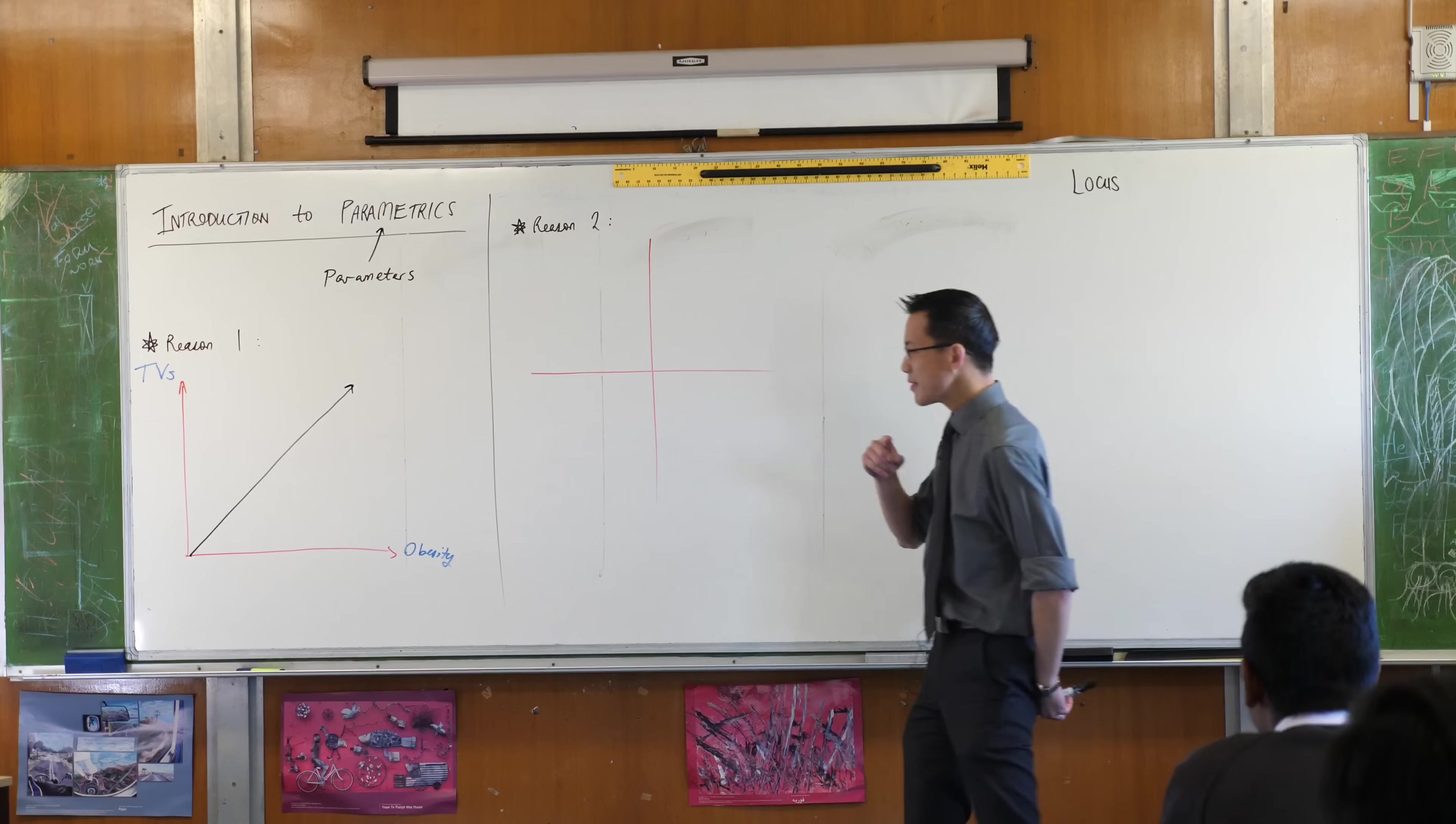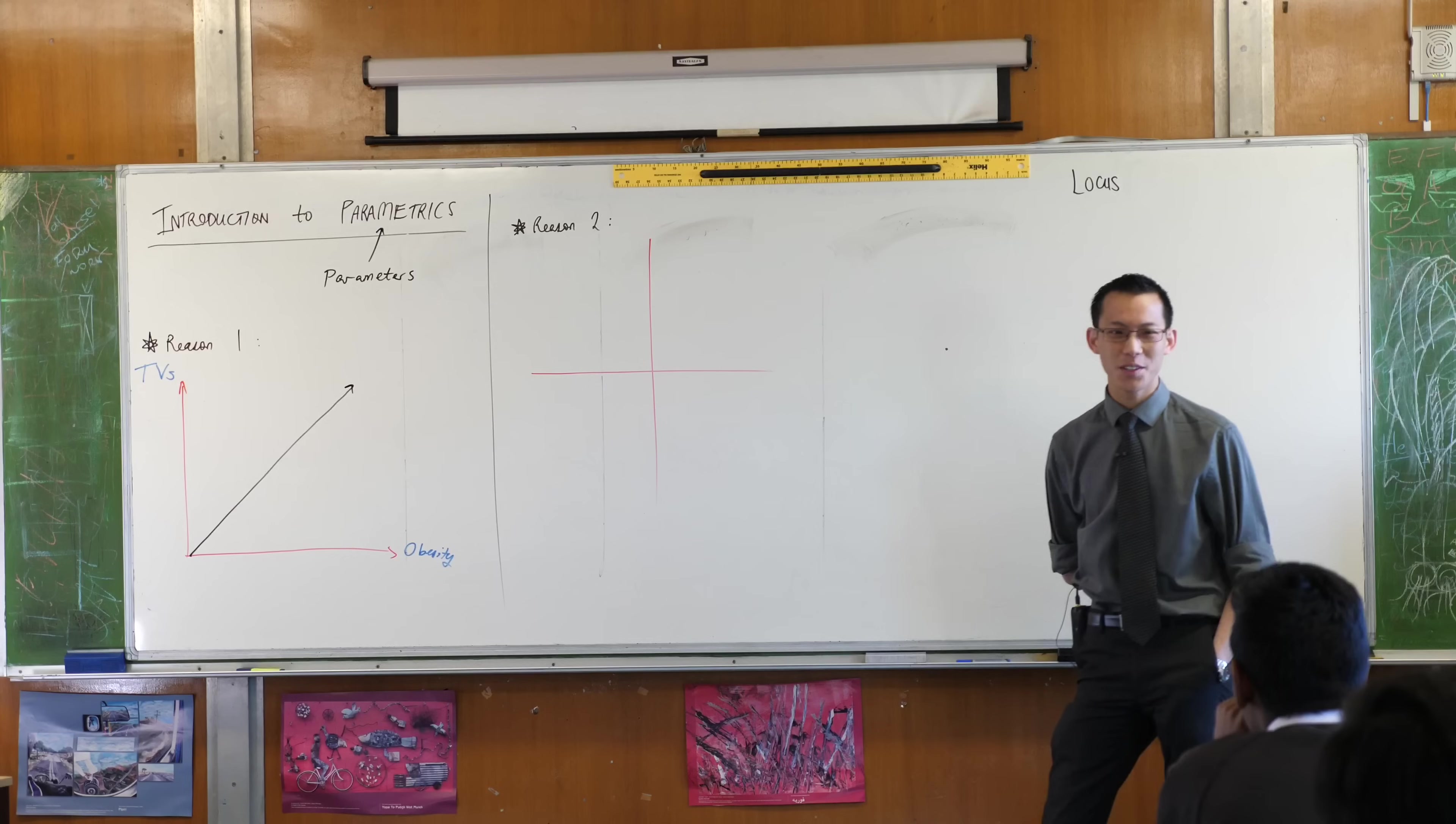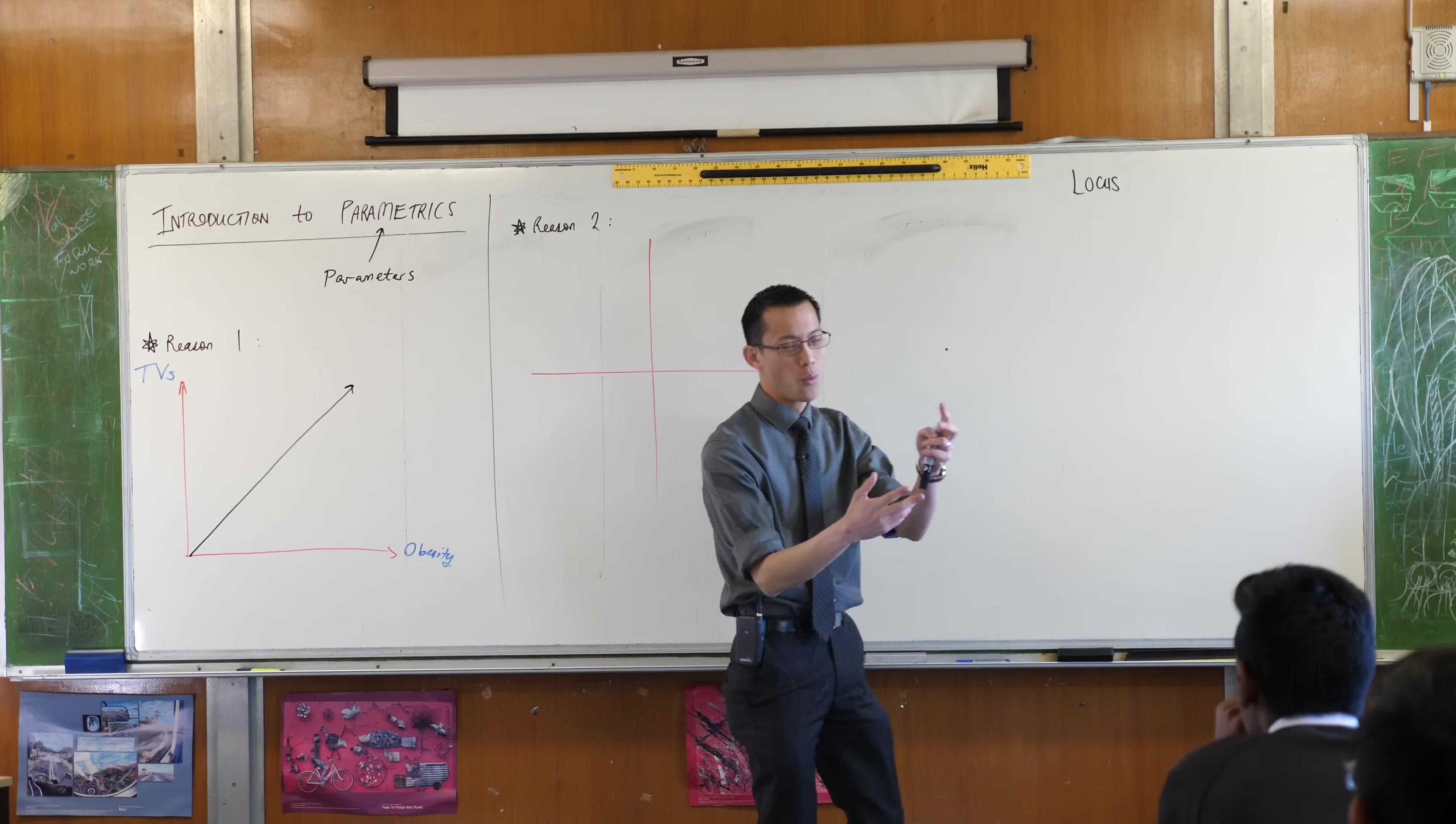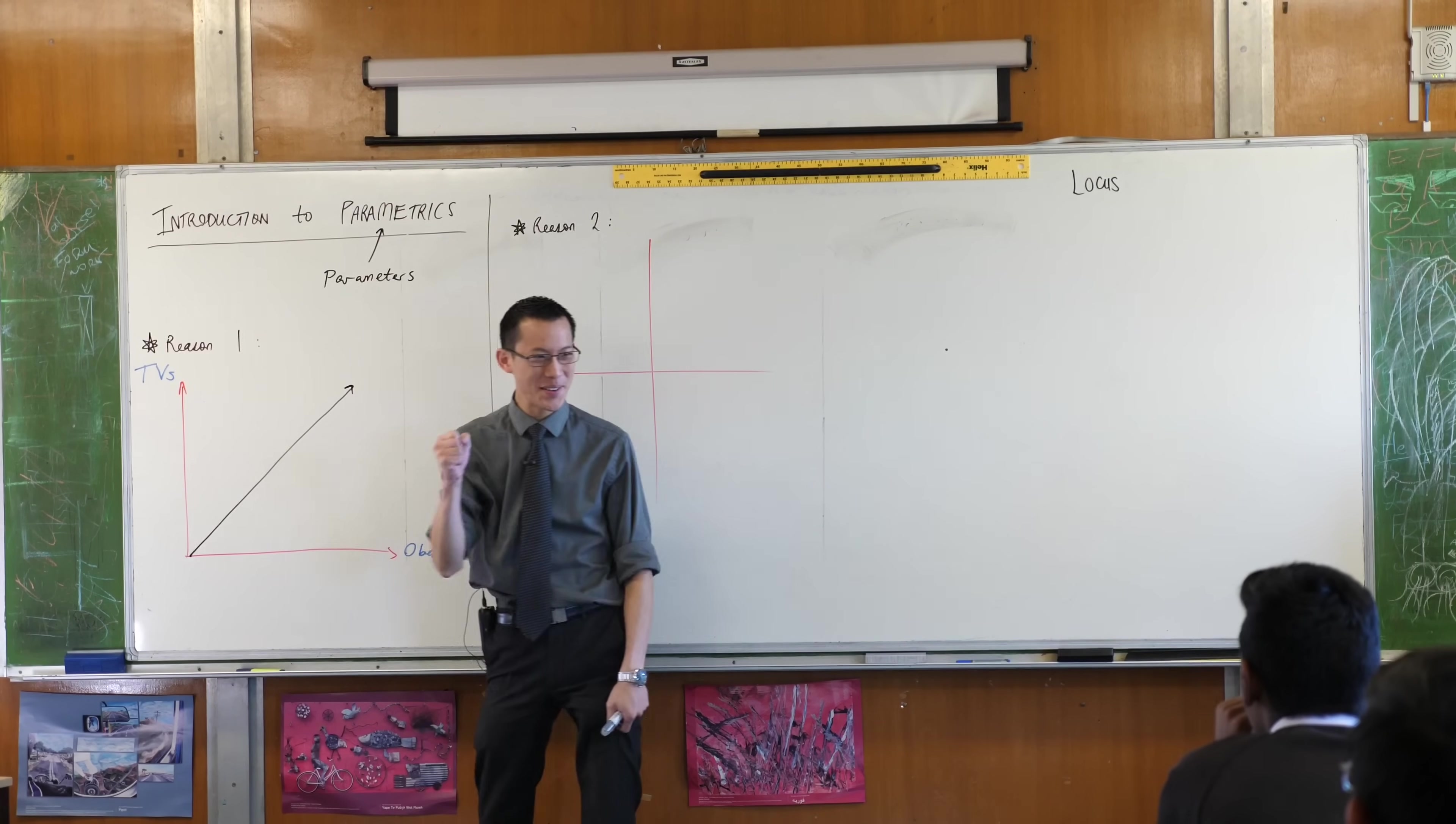Now the question then becomes what do you make of this? What pattern do you see? What conclusion do you draw? I mean I've drawn it as a linear thing, it could have been a curve like this or a curve like that but they're all going to be increasing. What conclusion would you draw? You look you see I think there's a connection between these two clearly.